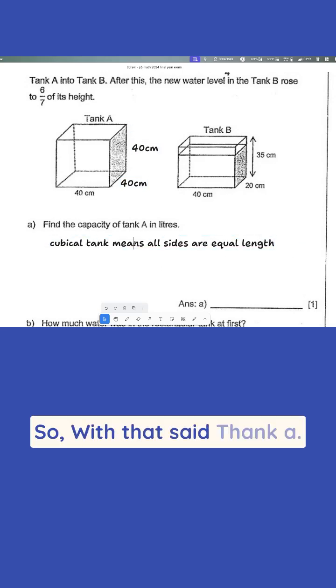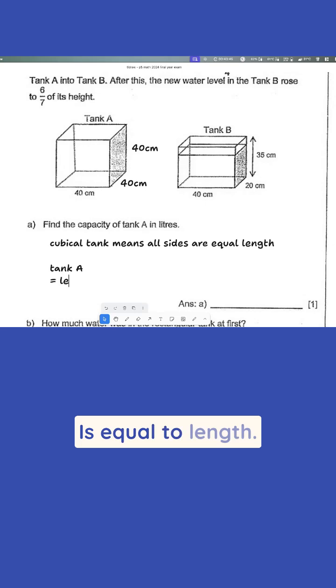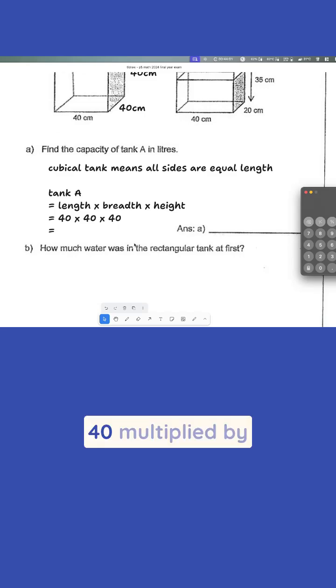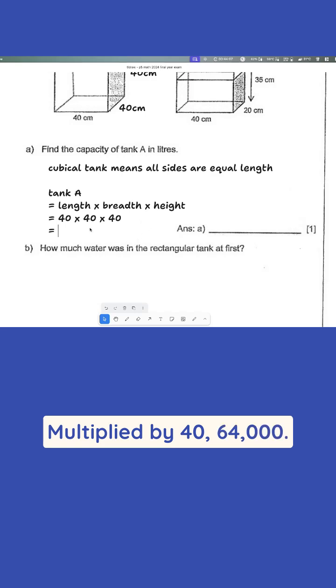So with that said, tank A is equal to length times breadth times height, which is equal to 40 times 40 times 40. This should be 64 if I'm not wrong. So 40 multiply by 40 multiply by 40, 64,000. 1, 2, 3 cm cubed, okay?